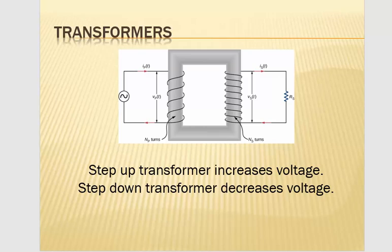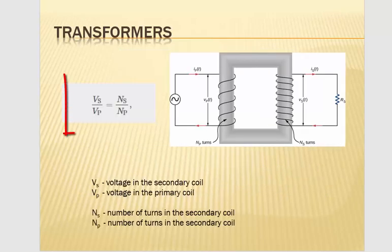So here's the equation for figuring out what's happening with your transformer. You've got a proportion between the voltage in the secondary and primary coils equal to the proportion between the number of turns in the secondary and primary coil. So if the number of turns in the secondary coil is bigger, then you have the step-up transformer and your voltage will increase.